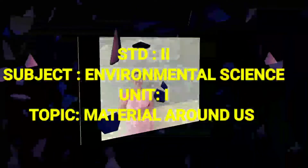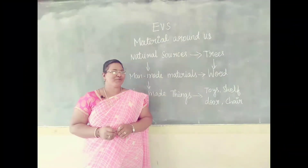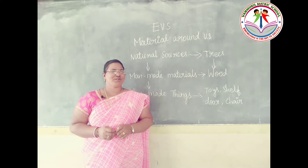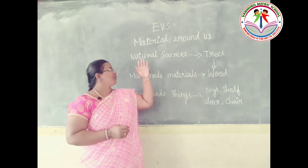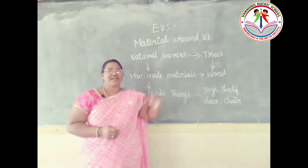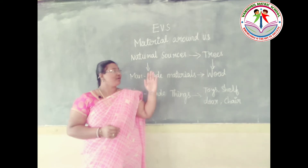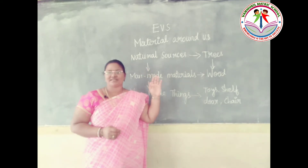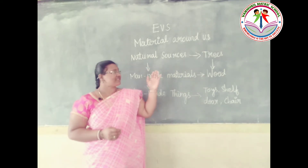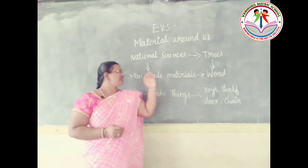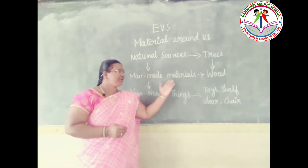Good morning students, welcome to Von Mughal Matriculation School E-Class. Today we are going to see about the topic Unit 1: Material Around Us. Last class we saw about the Introduction of Material Around Us. In this class we see about Natural Sources, Manmade Materials, and Manmade Things.